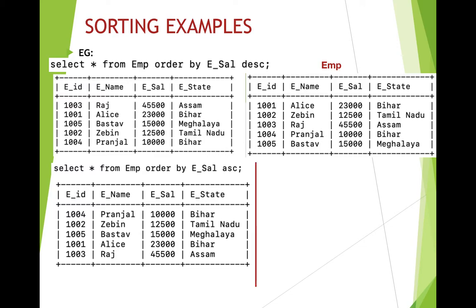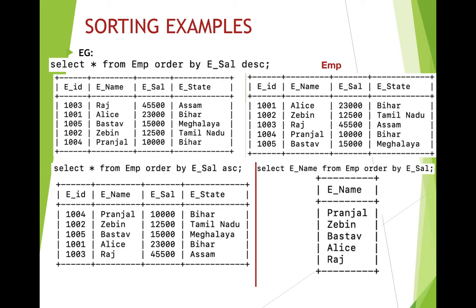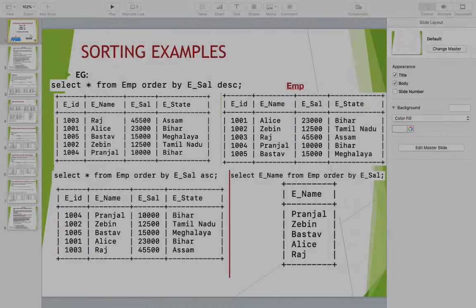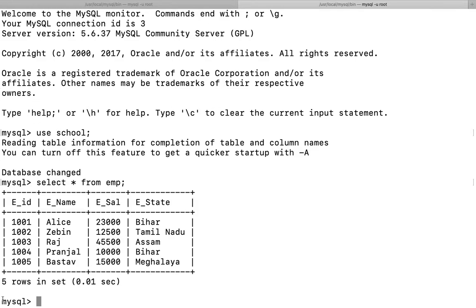If you want to eliminate certain columns, specify column names instead of star. For example, to display only employee names sorted in ascending order of salary, write: SELECT ename FROM emp ORDER BY esal. The sorting is done with respect to employee salary, but only the employee name column is displayed. The names are sorted in ascending order of the salary each employee earns.